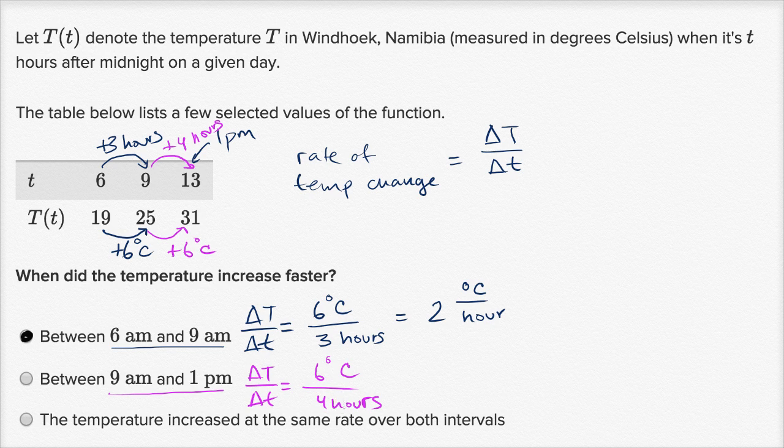To make the comparison clearer, let's do the math. 6 divided by 4 is 1.5 degrees Celsius per hour. And here you can make the direct comparison: 2 degrees Celsius per hour is faster than 1.5 degrees Celsius per hour. So that's why we liked this choice, between 6 a.m. and 9 a.m.